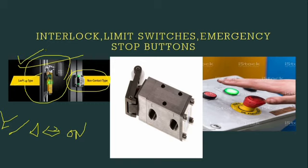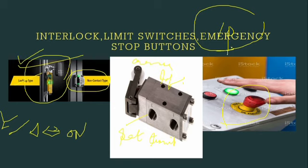Special devices include limit switches, which are used in electric cranes, lifts, etc. to set movement limits. Emergency stop push buttons are used to stop and prevent operation during emergencies. A single phasing preventer is also used, as a motor operating on a single phase is an abnormal condition that must be prevented.